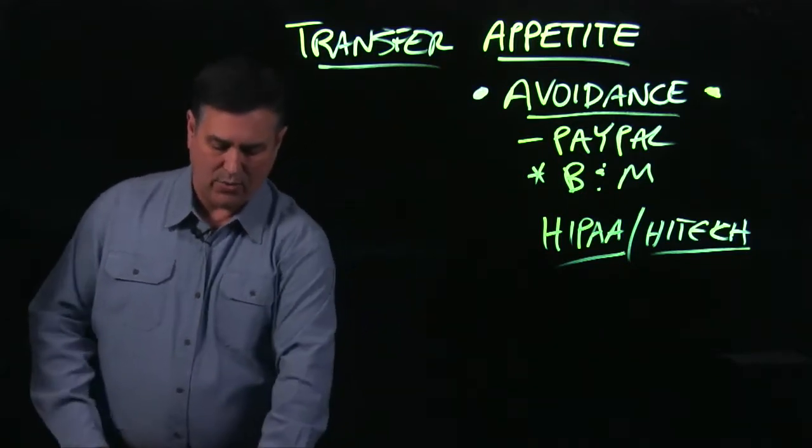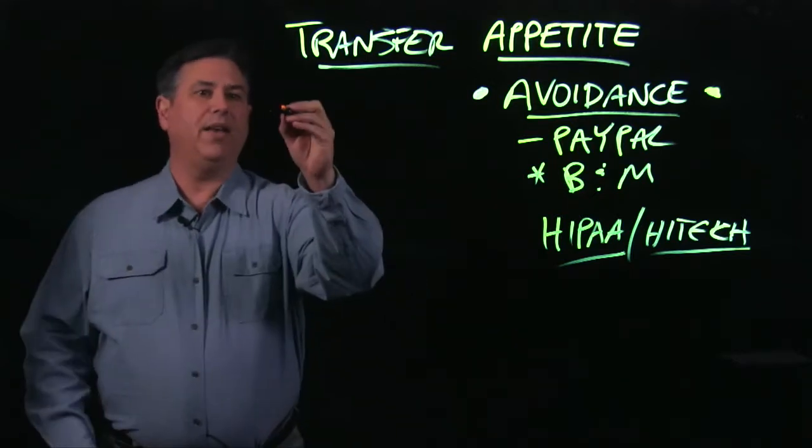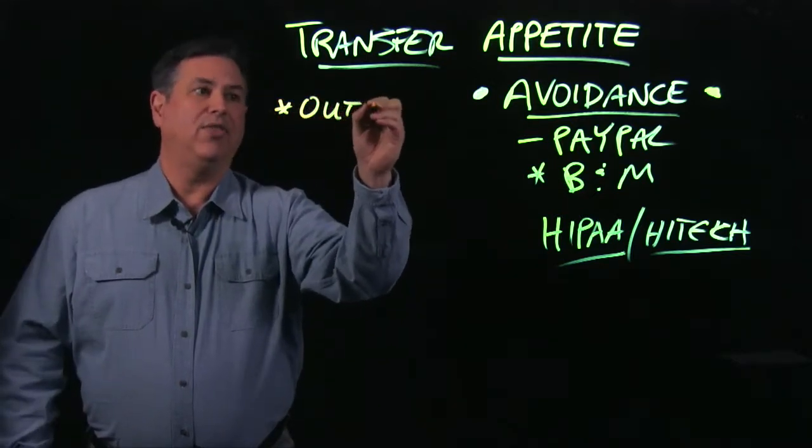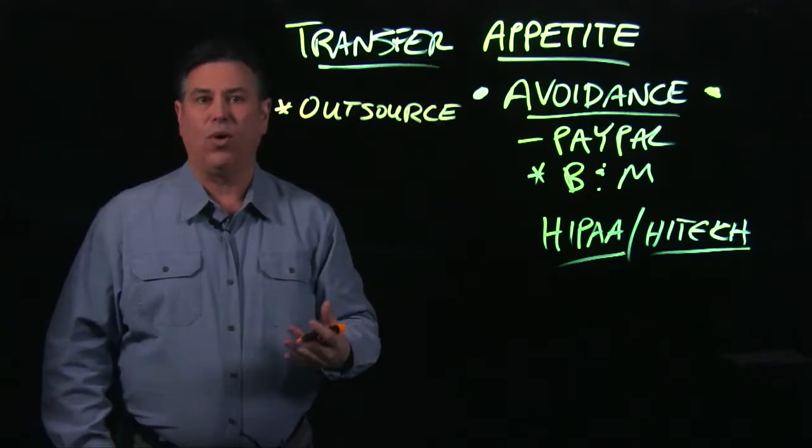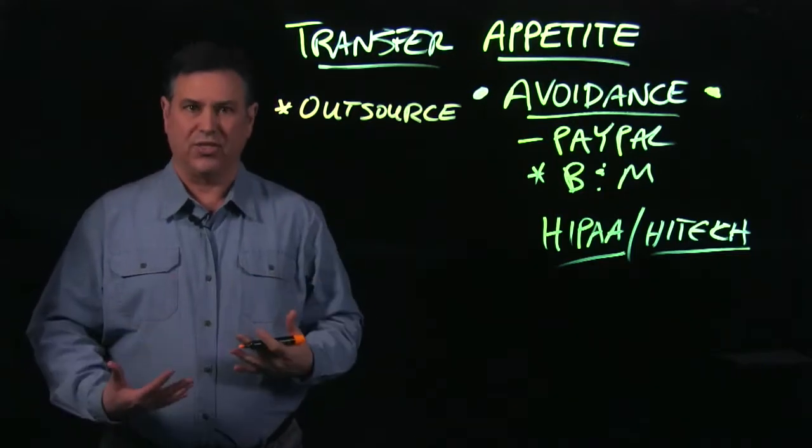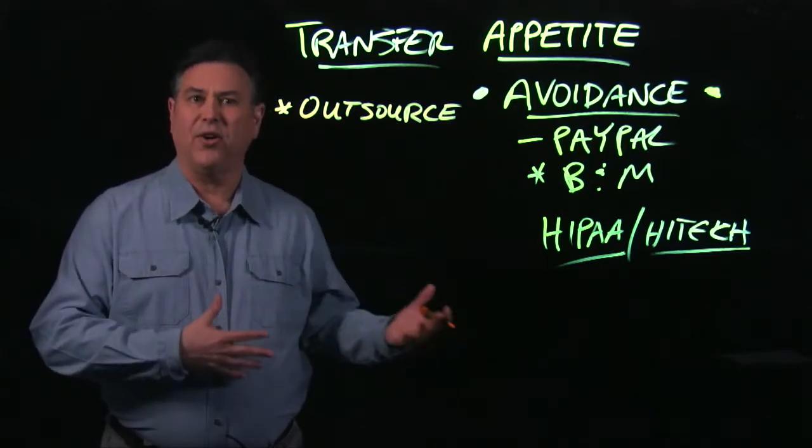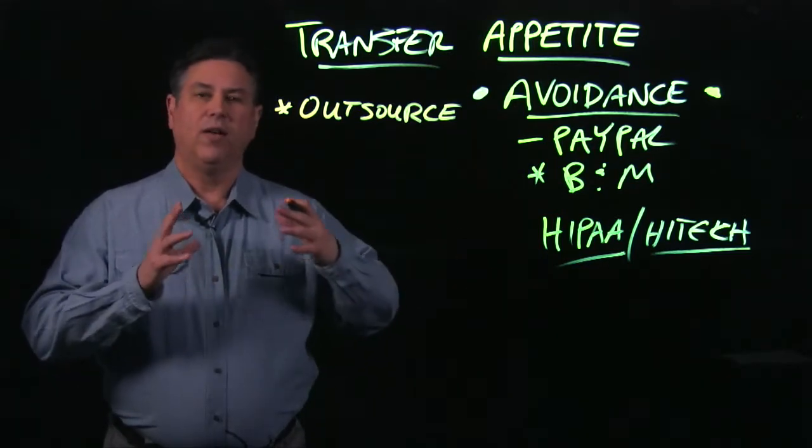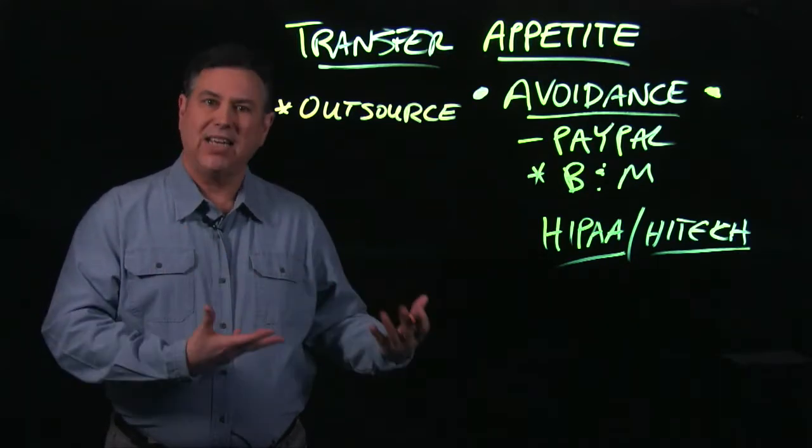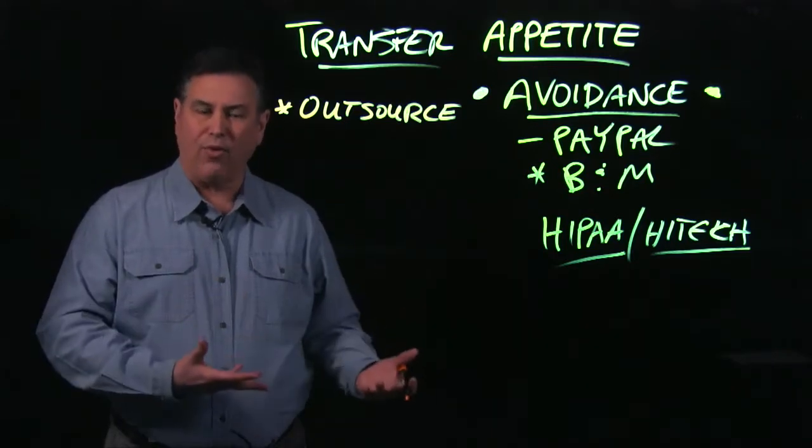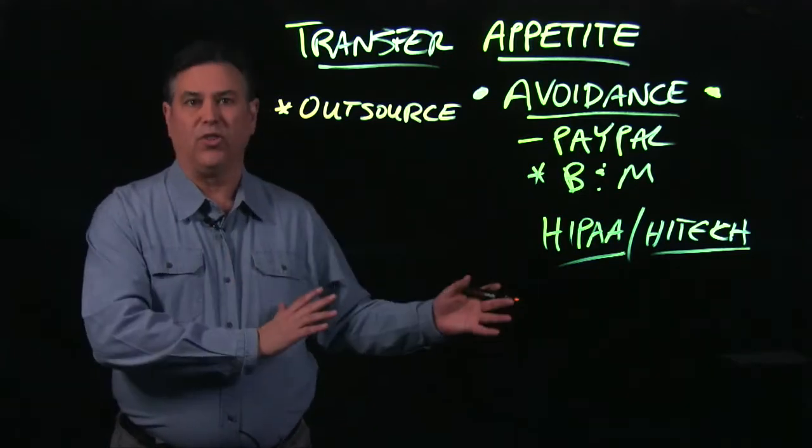Two of the most common ways that we transfer risk in our modern environments would be through outsourcing, even though it's arguable that outsourcing in some ways may actually introduce new risks. But you can engage in a managed security service provider, an MSSP, or a cloud service provider. You could outsource certain activities and because they are going to maintain the infrastructure, maintain the platform, maintain the services, you're outsourcing the risk. You're transferring the risk through outsourcing.